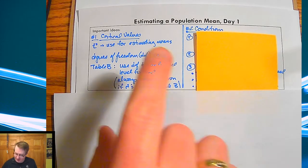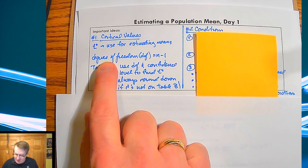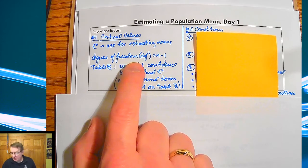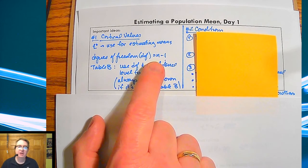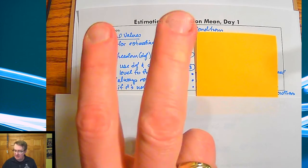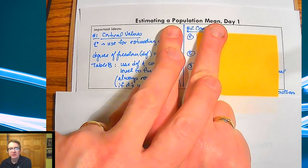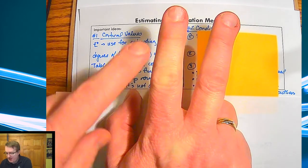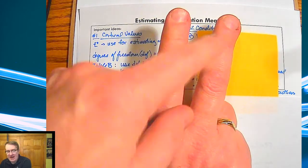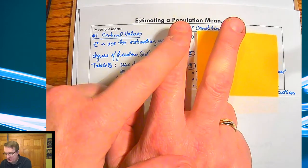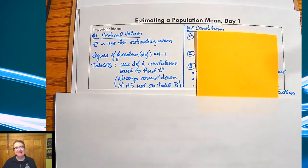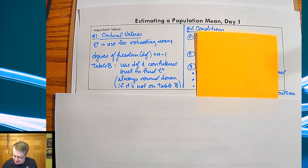T-scores we're going to use for estimating. Degrees of freedom remember is always going to be n minus one. The reason why it's n minus one is that when you get down to those last two people being chosen, let's say for a team, if I pick this one, this person has to go to the other team. So that second to last person pick actually determines two picks, so there's always one less choice of what's going on.